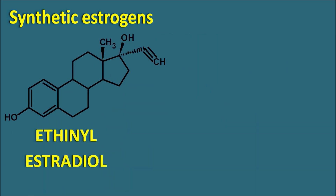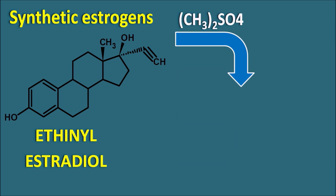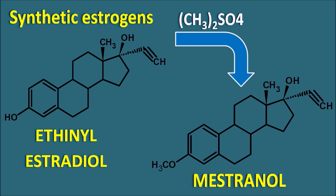From ethinyl estradiol we can prepare the prodrug mestranol. Mestranol has a methyl ether at the 3rd position — the OH group at the 3rd position is modified using methane sulfonate as a methyl group donor. Under the influence of this reagent, ethinyl estradiol is converted into mestranol, which has a methoxy group at the 3rd position. When this ether bridge is cleaved in the body, it produces ethinyl estradiol as the active drug.